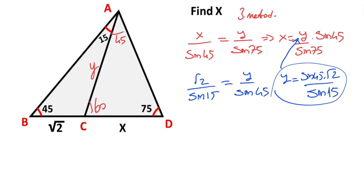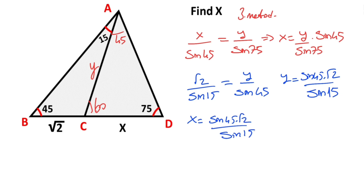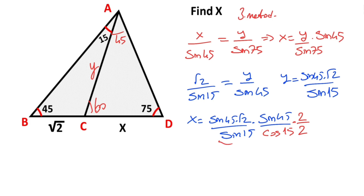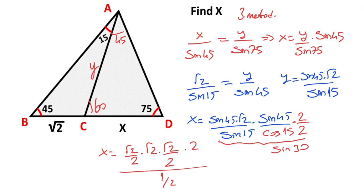Plugging this into the first equation: x equals sine 45 degrees times root 2 over sine 15, times sine 45 over sine 75 degrees. We know that sine 75 degrees equals cosine 15. Multiplying numerator and denominator by 2, the denominator becomes 2 sine 15 cosine 15 which equals sine 30. And sine 45 squared equals root 2 over 2, squared, times 2 over one half, which simplifies to 2. So x equals root 2.